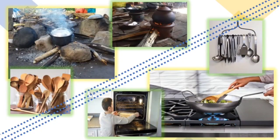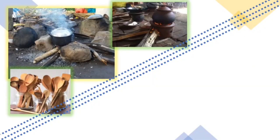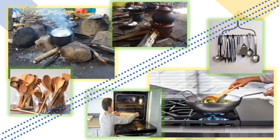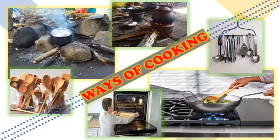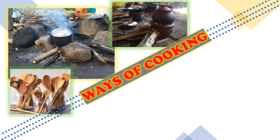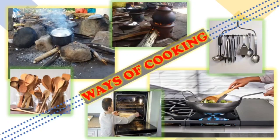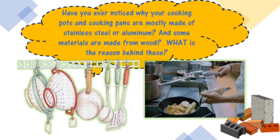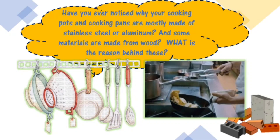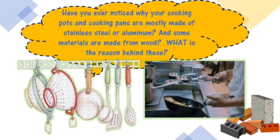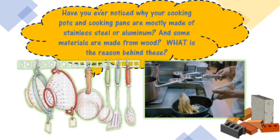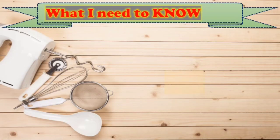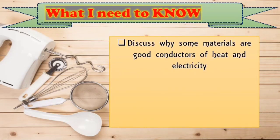Look at these pictures. Study the first set of pictures compared to the second set of pictures. What can you observe? Very good. These are ways of cooking — ways of cooking from the past, and these are the ways of cooking now. Have you ever noticed why your cooking pots and pans are mostly made of stainless steel or aluminum, and some materials are made from wood? What is the reason behind this? In this lesson, class, you are going to learn why some materials are good conductors of heat and electricity.